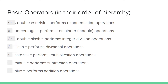For basic arithmetic operators we have these signs and symbols. As you will notice there are some that are double, such as the very first one — the double asterisk — and it is used to perform exponential operations. The percentage sign gets the remainder of a number. The double forward slash gives integer division, while the single slash is regular division, asterisk for multiplication, minus for subtraction, and plus for addition.